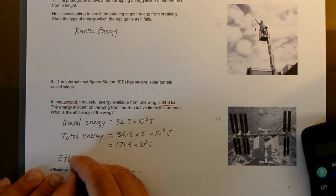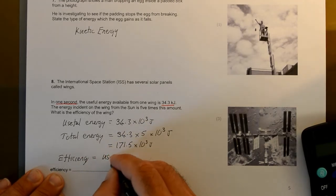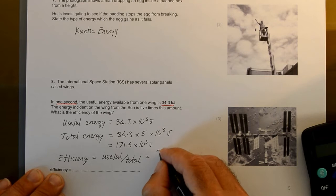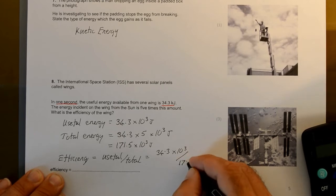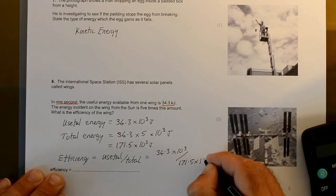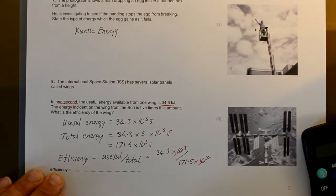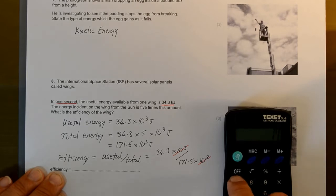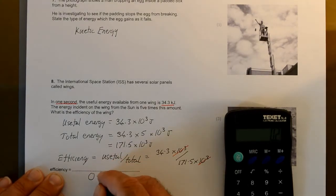Let's write down the formula. Efficiency equals useful divided by total, which equals 34.3 times 10 to the 3... Let's get rid of the 10 to the 3's because they cancel out. So I've got 34.3 divided by 171.5, which equals... the efficiency is 0.2.